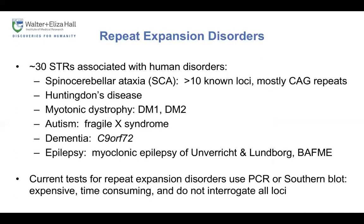Coming back to repeat expansion disorders, there are around 30 STRs associated with repeat expansions, mostly neurological. Spinocerebellar ataxia is associated with at least 10 loci, most being CAG repeats. Huntington's disease and myotonic dystrophy are well-known examples. Repeat expansions play an important role in autism — Fragile X syndrome is one of the most common genetic causes. They play a role in dementia through the C9ORF72 expansion, a small role in epilepsy such as progressive myoclonic epilepsy of Unverricht-Lundborg, and a very recent discovery of a novel repeat expansion associated with benign adult familial myoclonic epilepsy, just published in Nature Genetics.